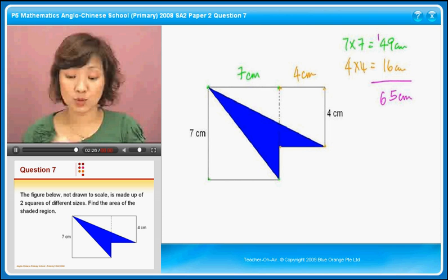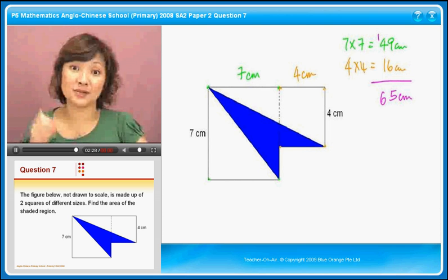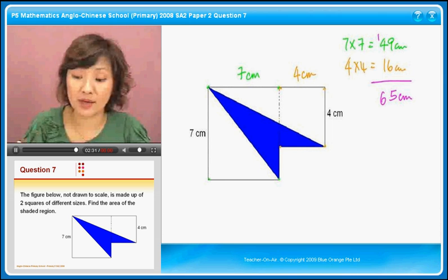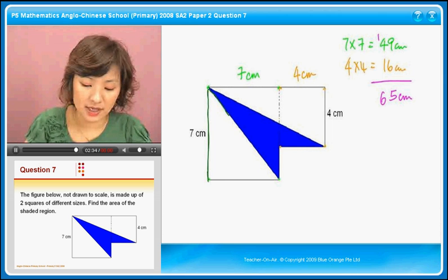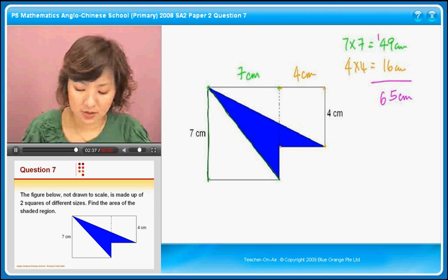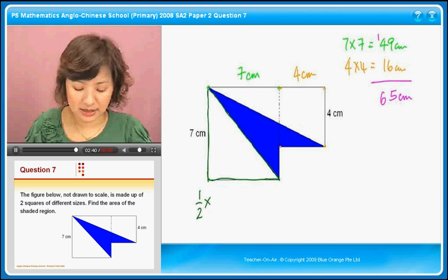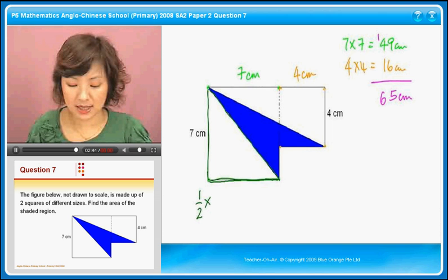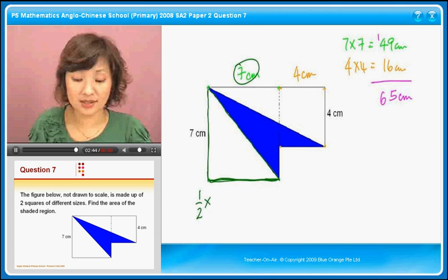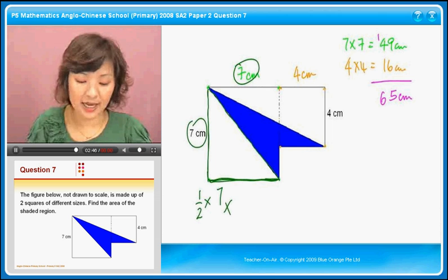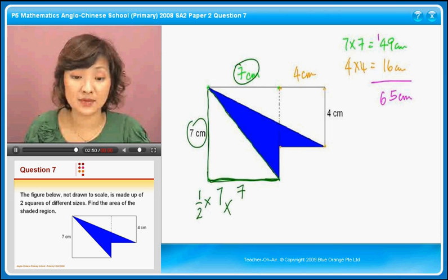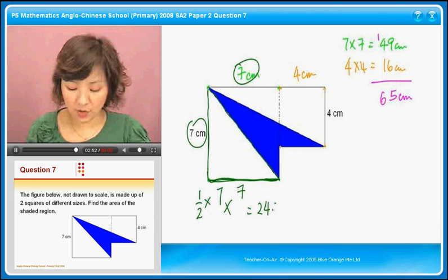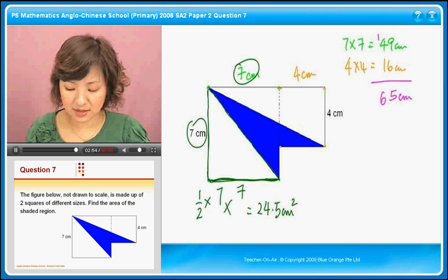Now, then I will have to go look at the unshaded part to see if I can do anything about it. So let's look at this triangle first. Do you know the area of this triangle? This triangle is half times the base, which is here. It's 7, because this is 7 too. And then the height is another 7. So half times 7 times 7, that gives you 24.5 square centimetres.